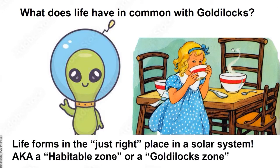Generally, for a planet to even have the potential for hosting life, it has to be located within the habitable zone. Planets in a habitable zone are more likely to be at a temperature and have the right components for life as we know it.